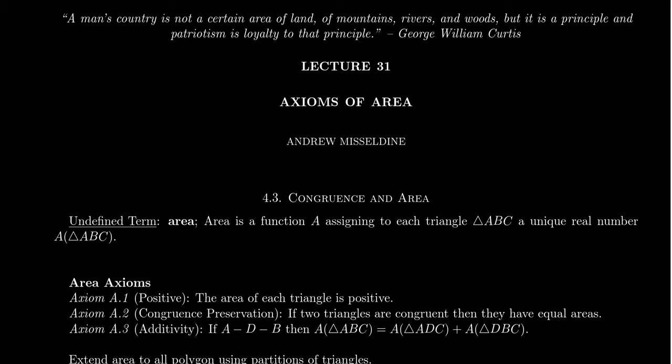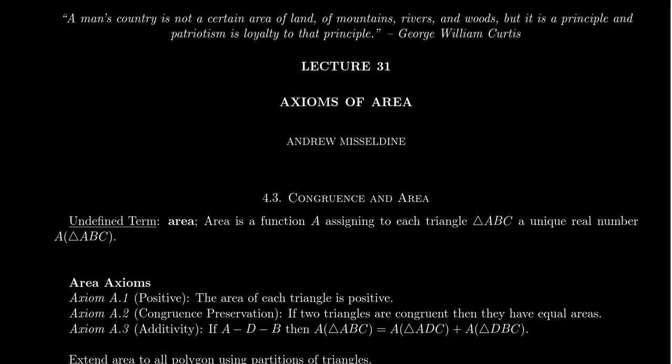Throughout this course, we've talked about a lot of undefined terms, such as incidence, points, lines, between, congruence. That's basically most of them. But it turns out that's just sort of the tip of the iceberg on the type of undefined terms we could have in a geometric axiomatic system. Today, we're going to talk about yet another undefined term — the notion of area. I mean, if you had to explain to someone what area is, could you do it really quickly without using synonyms? Area is how much stuff is in a two-dimensional figure inside it? It's not so easy. We're going to treat it as a logically undefined term for our axiomatic system.